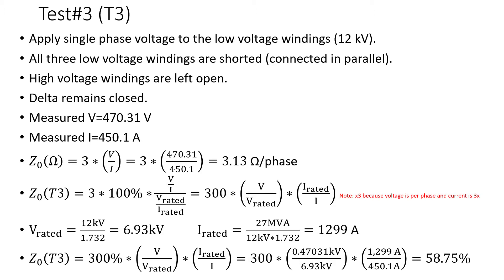Test 3: apply single-phase voltage to the low voltage winding — in this case the 12 kV winding, just as an illustration. All three low voltage windings are shorted and connected in parallel. The high voltage windings are left open.